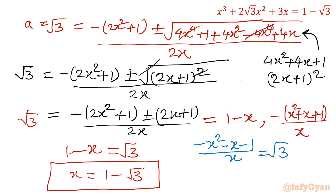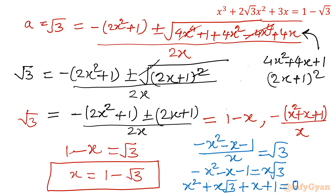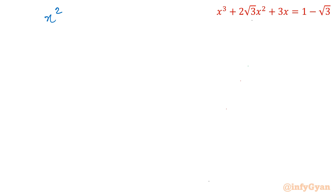Collecting all terms to one side from the second equation: x² + x·√3 + x + 1 = 0, which can be written as x² + (√3 + 1)x + 1 = 0. This is a quadratic equation.